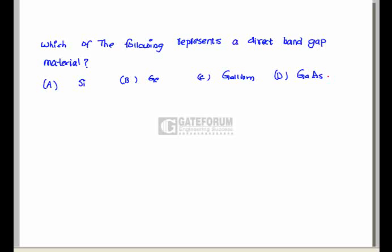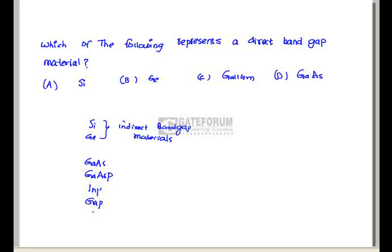The question asks which material represents a direct bandgap semiconductor. Compound semiconductor materials such as gallium arsenide (GaAs), gallium arsenide phosphide, indium phosphide, and gallium phosphide are direct bandgap materials. Silicon and germanium are indirect bandgap materials. Hence option B is correct.